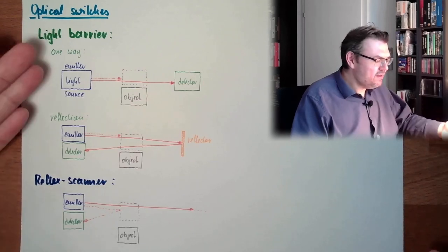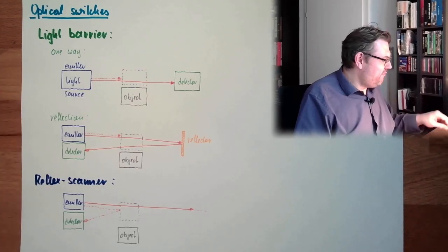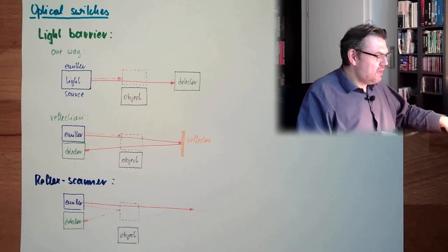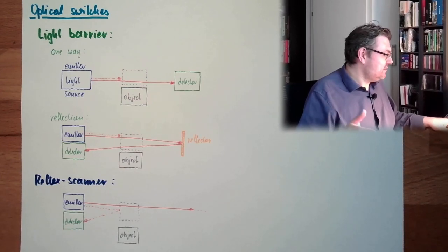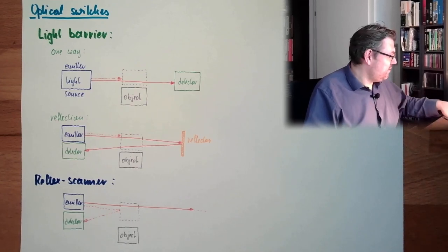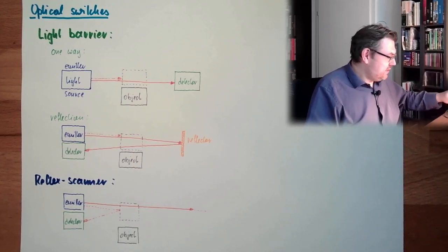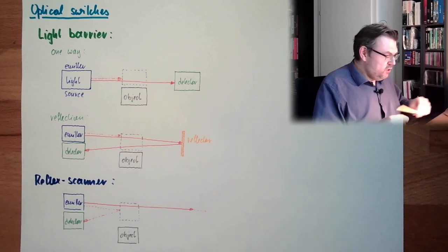And here we are already at the difficulties we're facing. So what are the difficulties we are facing with those optical switches? Well, light is all around us. So we usually have light somewhere. So let's note issues.